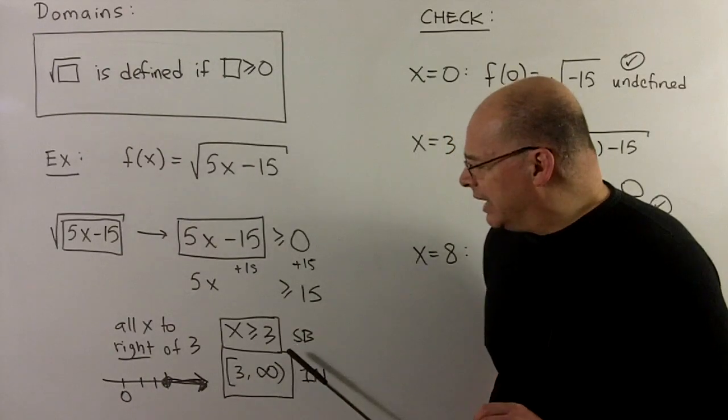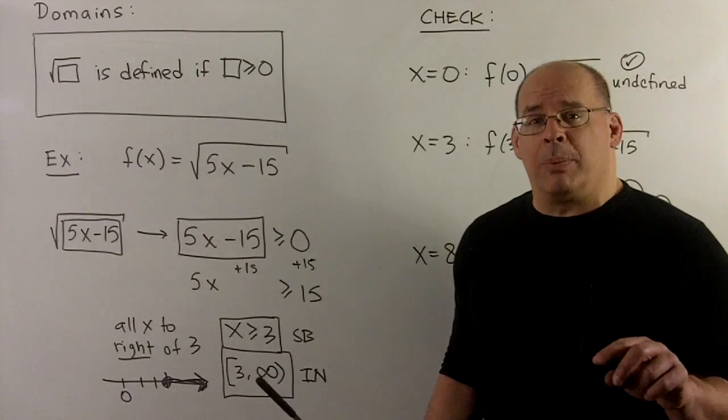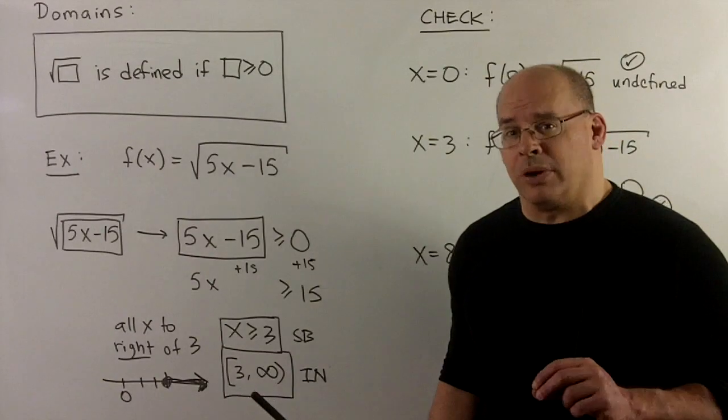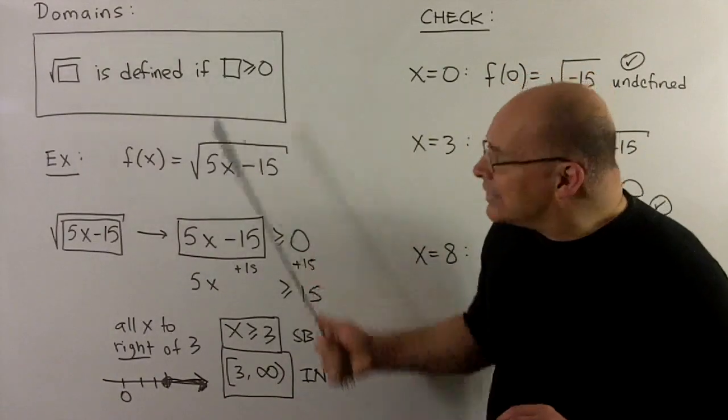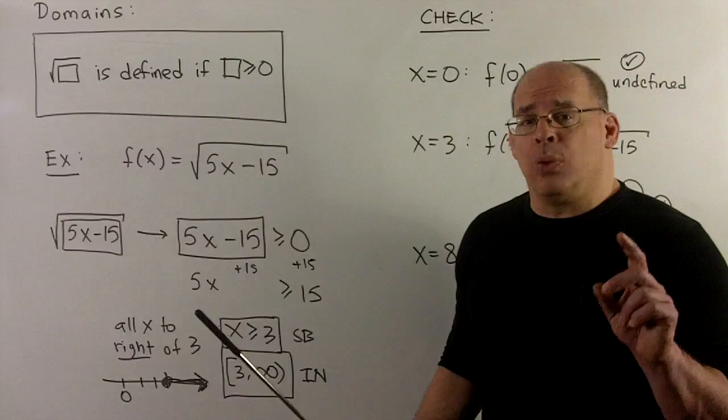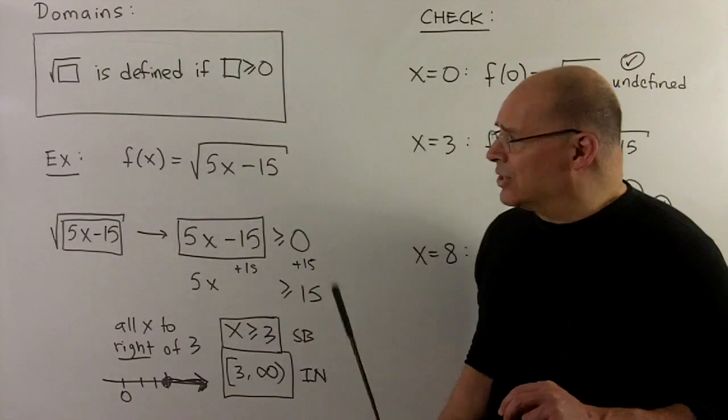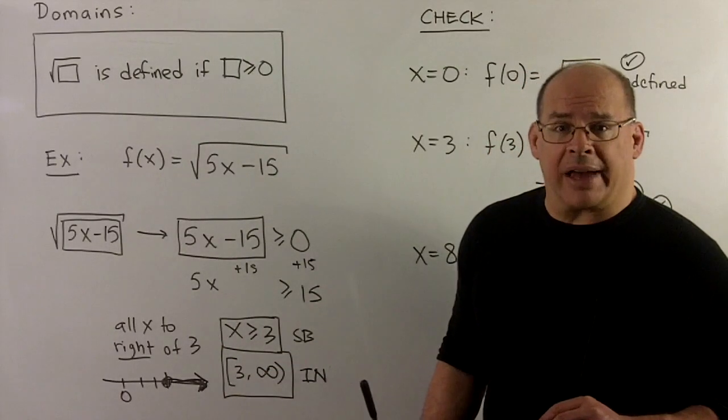3 to infinity, and then we're going to use the hard bracket on the 3 since we want the 3 included. And that's a problem for radicals and domains other than plain old square root of x.